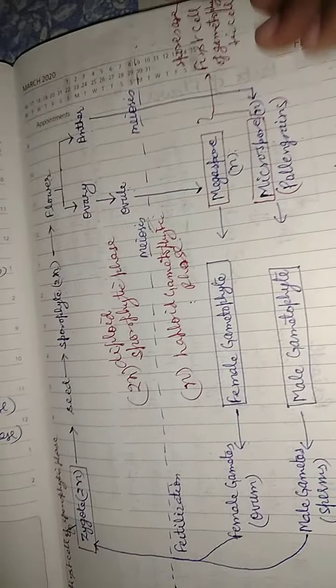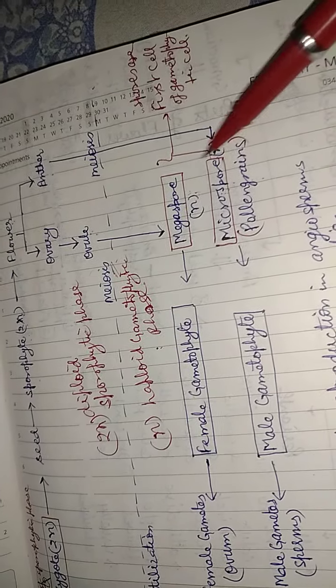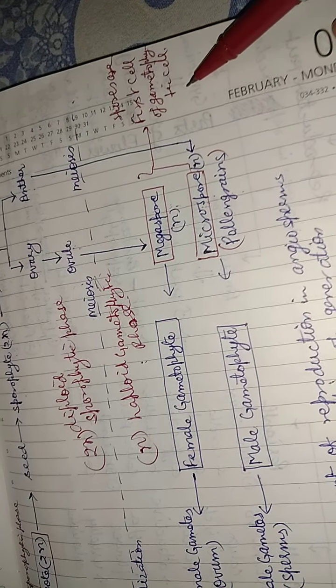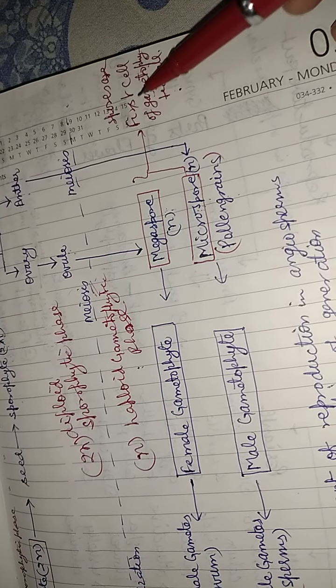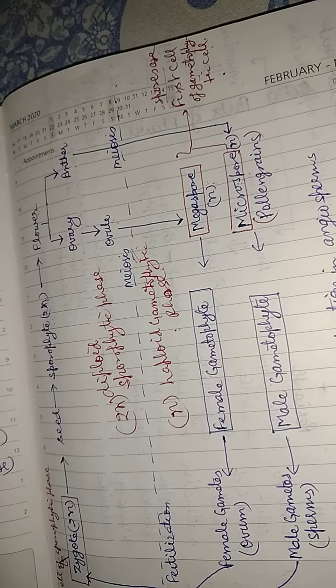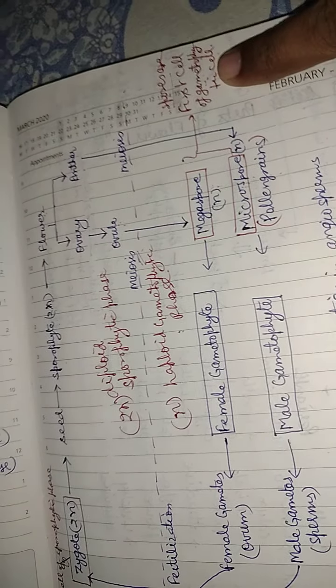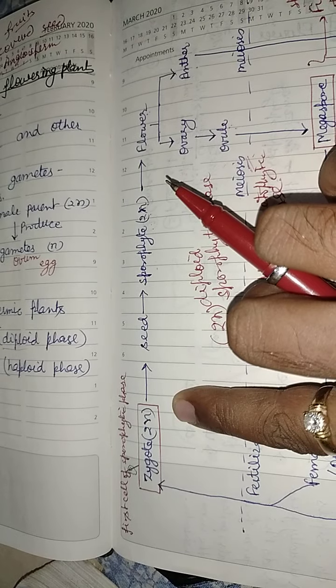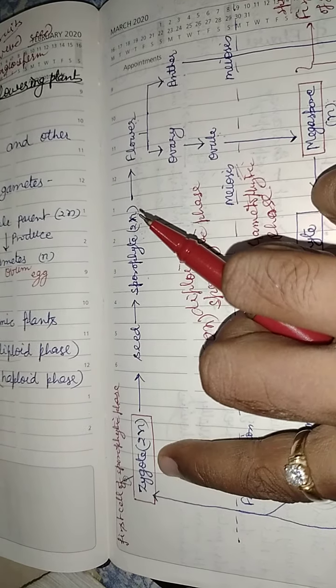This is diploid 2N or 2X, and this is haploid X or N — both notations are correct. The spores are the first cell of the gametophyte, while the zygote is the first cell of the sporophytic phase. This is a very important question for competitive exams: the first cell of the gametophytic phase is spores, and the first cell of the sporophytic phase is the zygote.